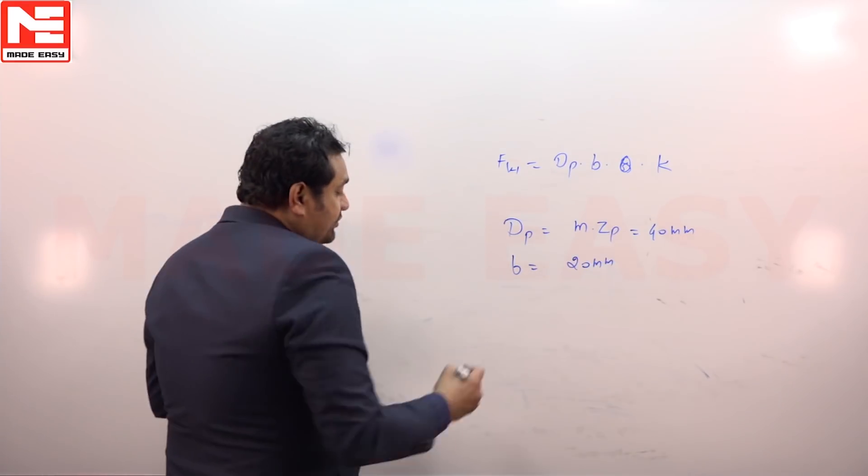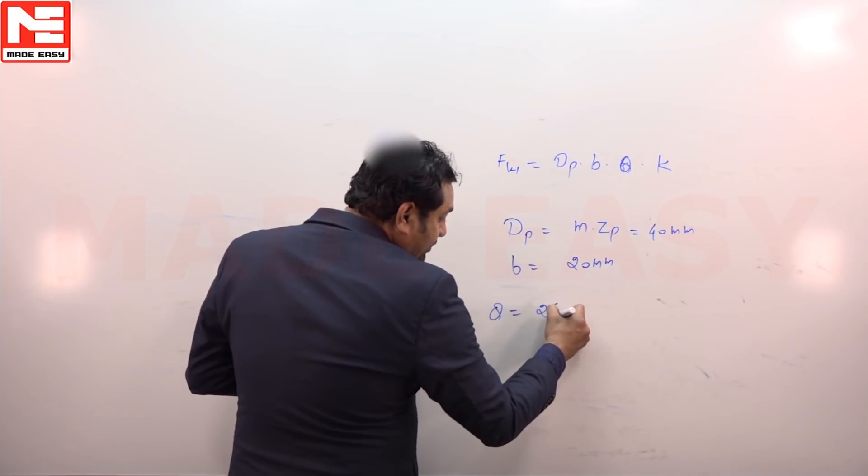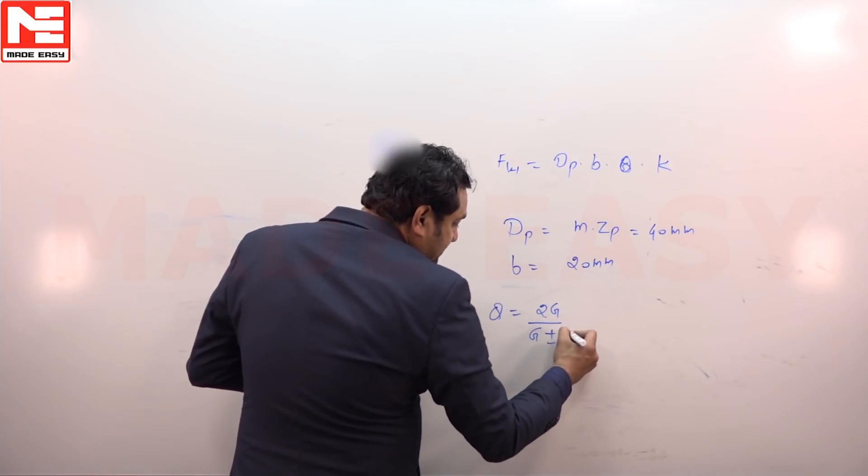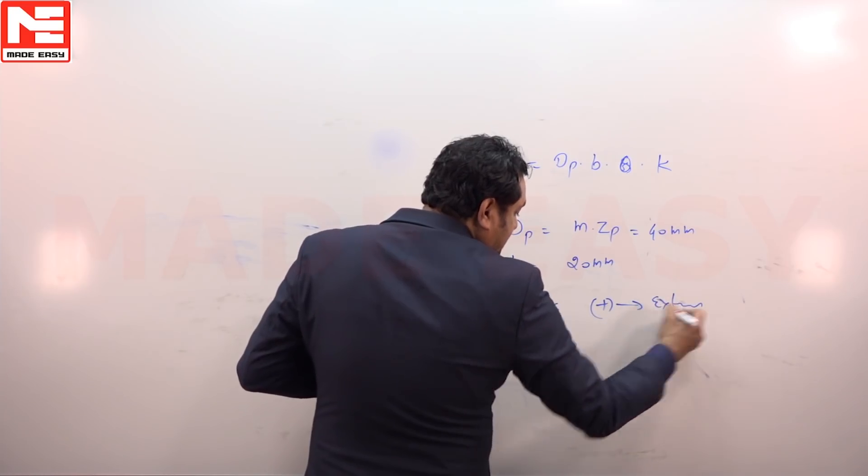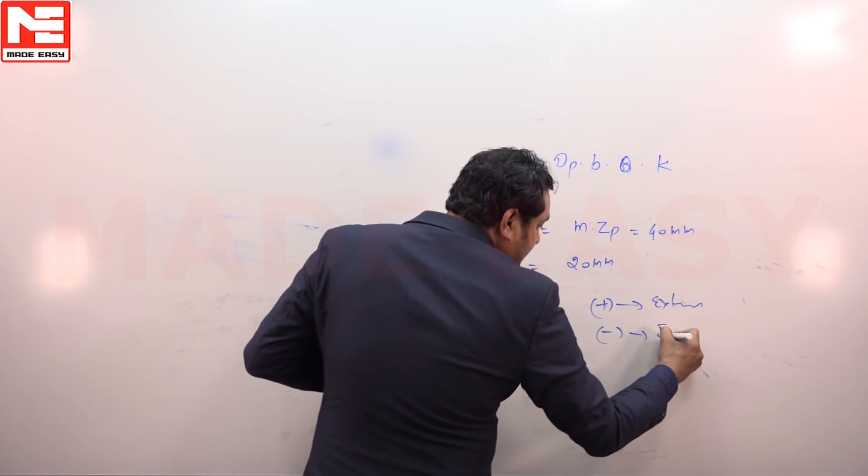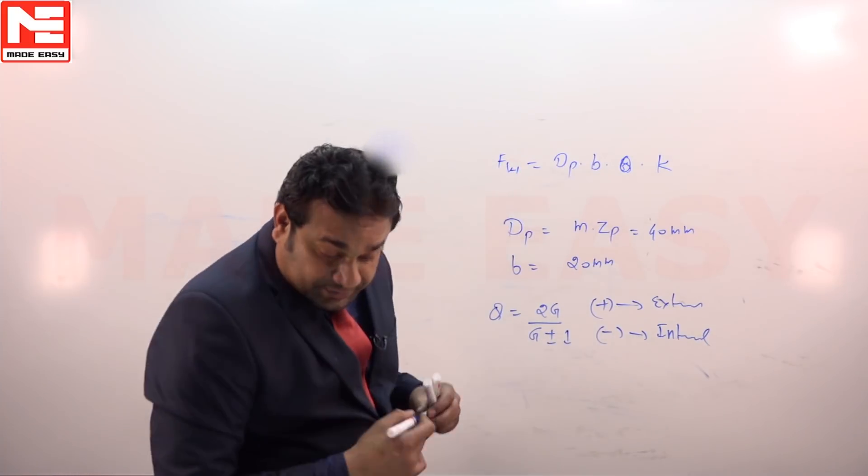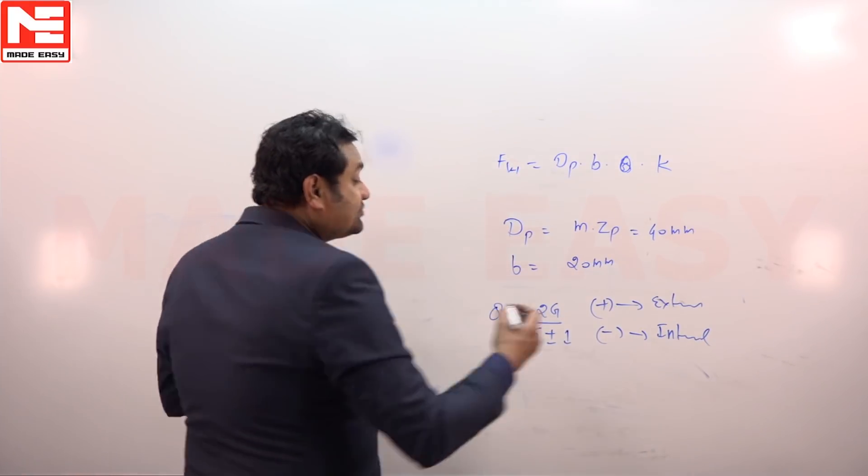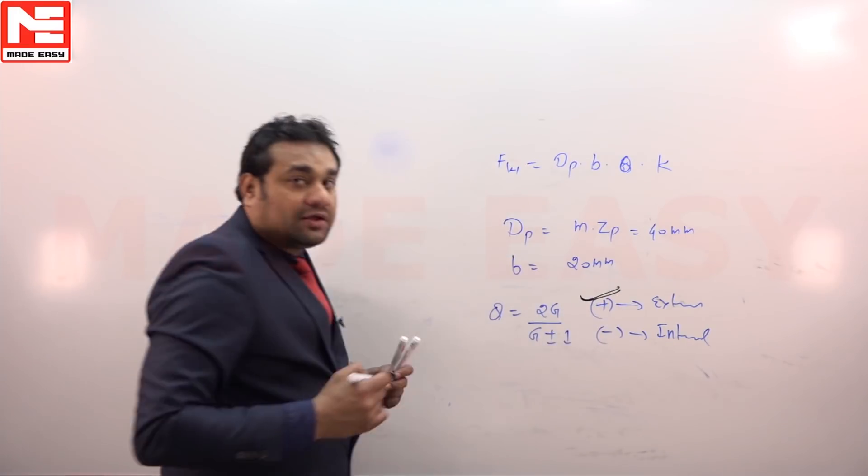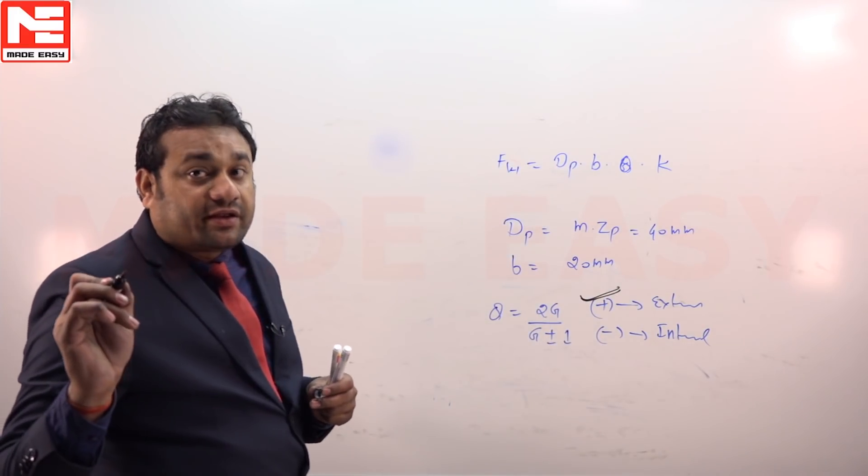Q is the ratio factor, and Q value is 2G divided by G plus or minus 1—plus for external, minus for internal. If nothing is mentioned in the question, always consider external because external gears are weak in wear.